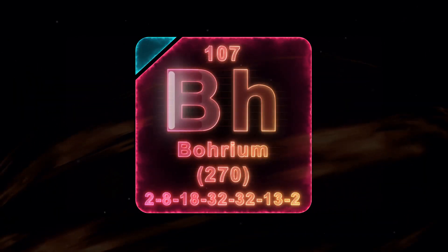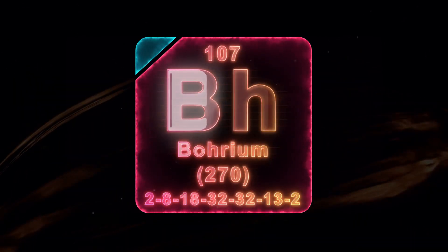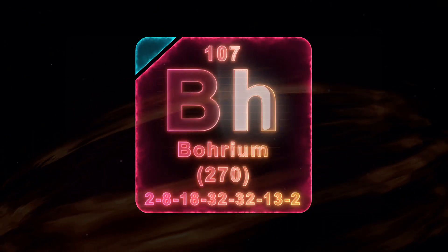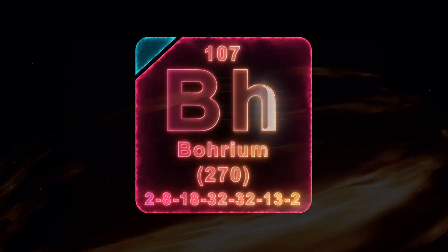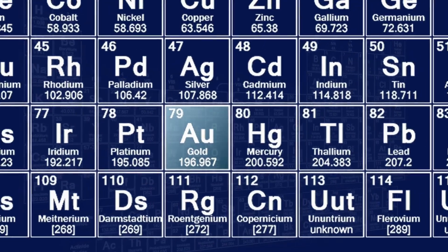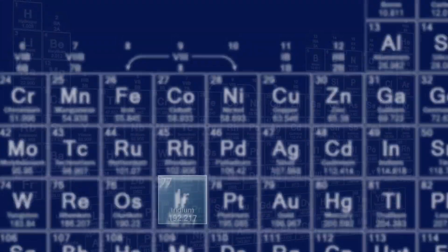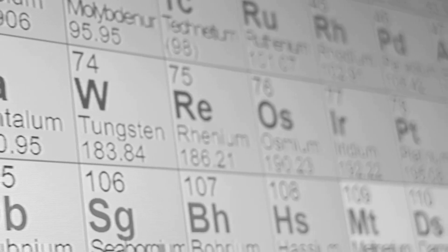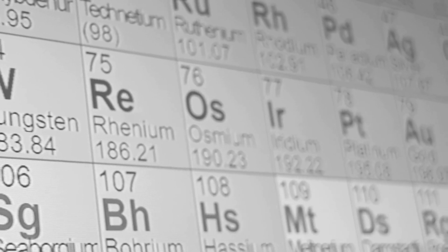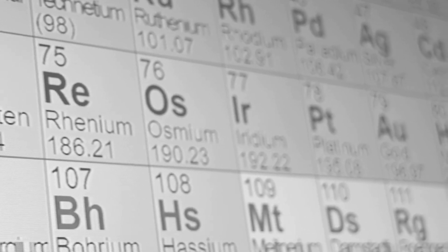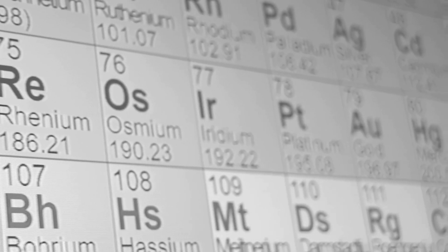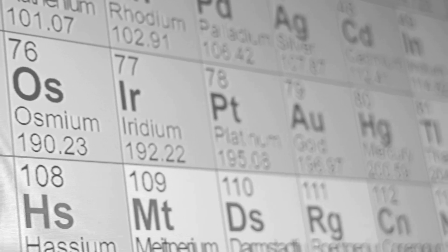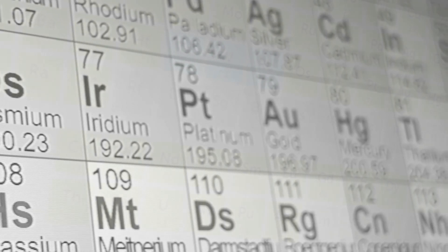Now, the periodic table organizes elements based on their atomic number and properties. It reveals periodic trends and relationships among elements. It's not just a chart — it's a powerful tool that chemists use to understand, predict, and manipulate the behavior of atoms and molecules.